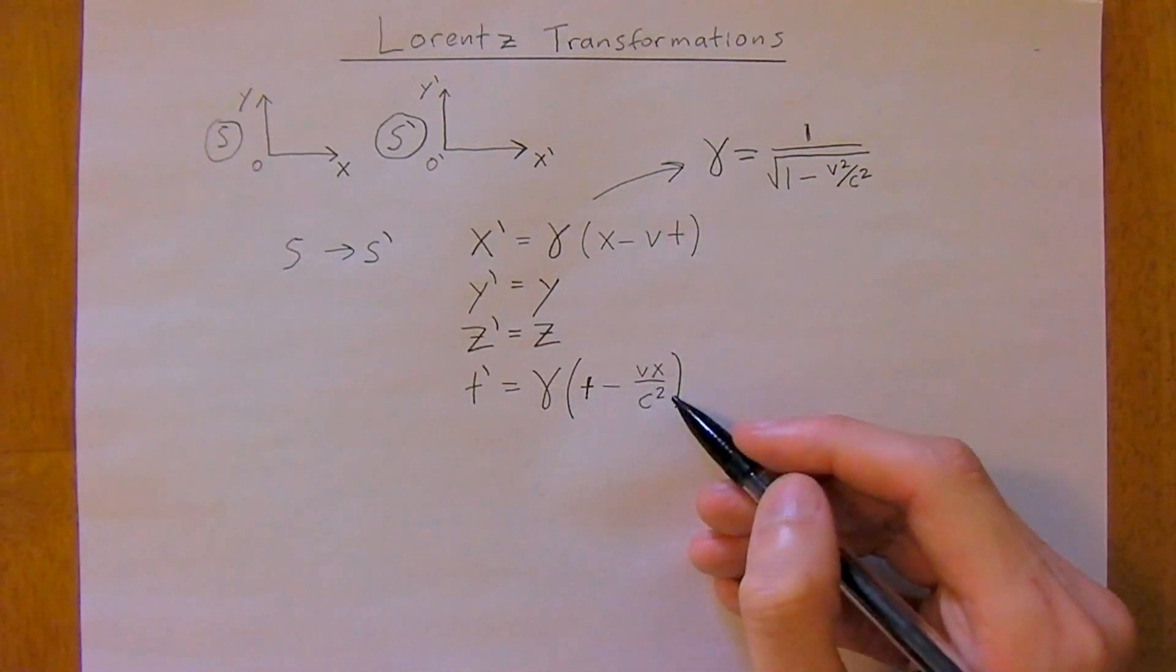But time is going to change now. Time is equal to gamma times, let me just make sure, oh of course we need a T in there. So gamma T minus V X divided by C squared. These primes, they do matter. It means we're talking about this frame, so we're going to move our coordinates from the S to the S not frame, and this is the system of equations we would use for position.